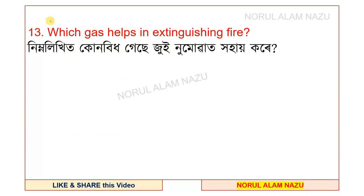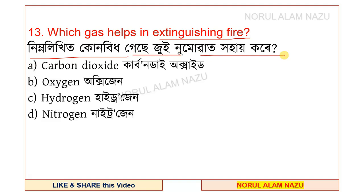Question number 13: which gas helps in extinguishing fire? The options are nitrogen, hydrogen, oxygen, and carbon dioxide. The answer is carbon dioxide — CO2 is the gas that helps in extinguishing fire.